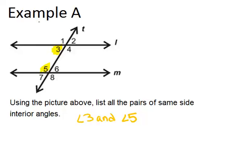The second pair of same side interior angles is right here, angle 4 and angle 6. These two angles are both on the right side of the transversal T, and also both on the inside of the lines L and M.